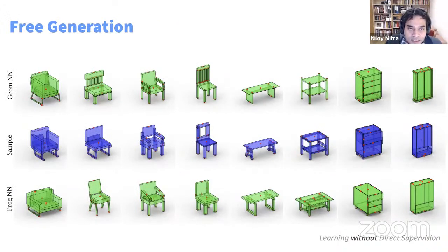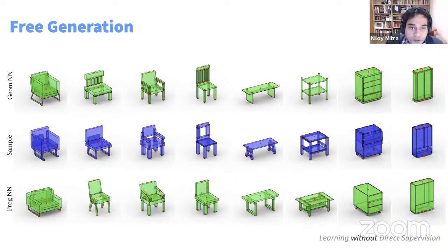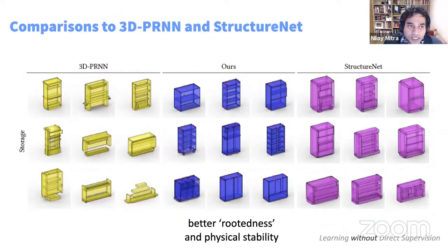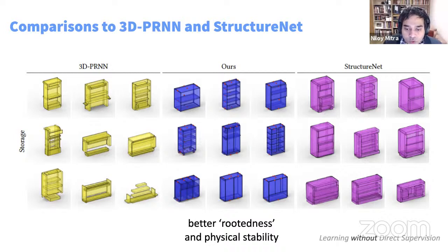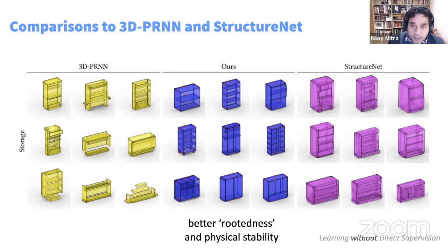We can sample directly from the program space. Green nearest neighbors are shown in both program space and geometric space to confirm the network is learning something useful. Red points denote the attach points. Compared to 3DPRN and StructureNet, our approach — because it has access to hierarchy and attachment points — produces more structurally grounded designs that are physically connected rather than falling apart.